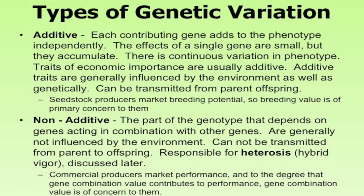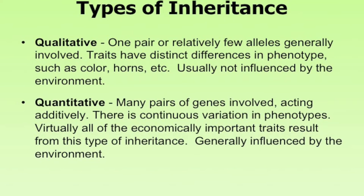The second type is non-additive, where the genotype depends on genes acting in combination with other genes. This becomes harder to predict and is generally not influenced by the environment. These gene combinations cannot be transmitted from parent to offspring — the parent contributes genetics, but not these specific non-additive combinations. Non-additive effects are responsible for heterosis, or hybrid vigor, which we'll discuss later. Commercial producers market performance, and gene combination value is important to them — that's why commercial producers look for hybrid vigor and heterosis.